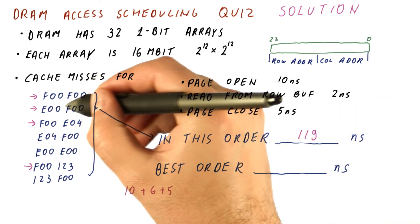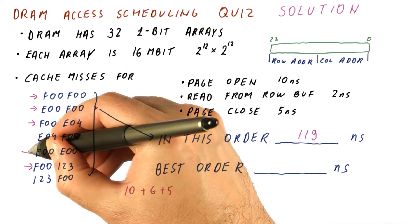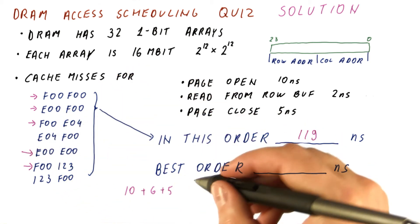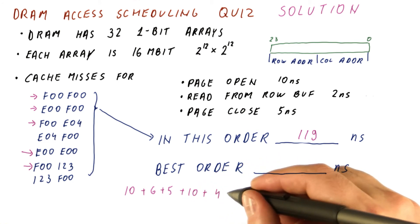Then what happens is we open the next row, and we read everything from that row, which includes this too. So we end up opening one row, reading two things from it, and then closing it.